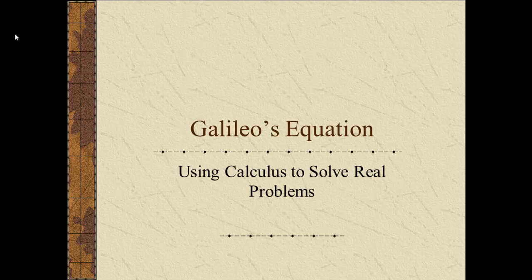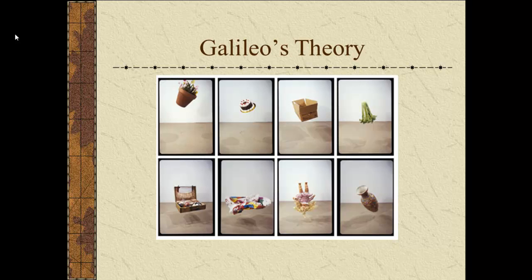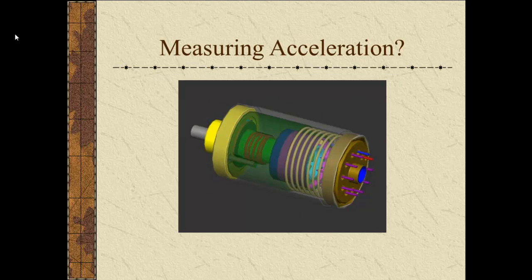Calculus can help solve seemingly impossible problems like the one an Italian scientist had in the 1500s. What was Galileo doing dropping objects off the Leaning Tower of Pisa? He was trying to prove falling objects accelerate uniformly, meaning they speed up by the same amount every second regardless of their weight. But he couldn't measure acceleration. The accelerometer hadn't been invented yet.